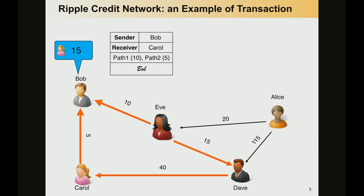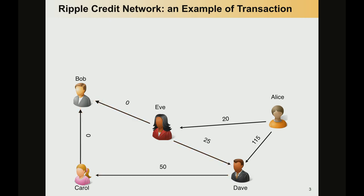Once the transaction is signed by the secret key of the sender, in this case Bob, the transaction is actually performed. So 10 credits are settled through the path with Eve and Dave. And finally, the last five credits are settled with the direct link with GAR. At that moment, the whole debt is actually settled.